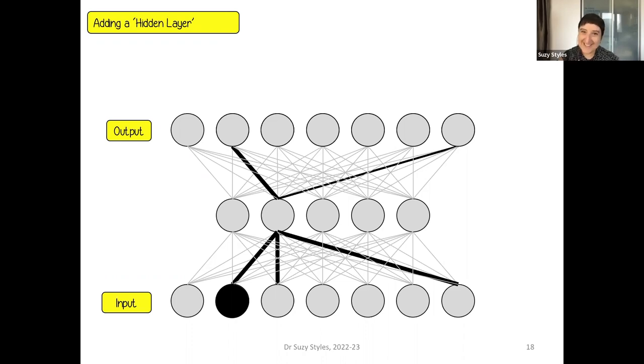If we activate this node in the input layer, it'll activate this node in the hidden layer and both of these nodes in the output layer. And the same is true if we activate this node and this node in the input layer. So now we have a much more dynamic representation space where different inputs can have the same output and through the inclusion of this hidden layer, information is effectively restructured.